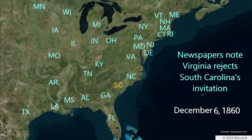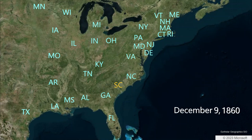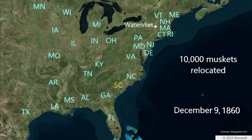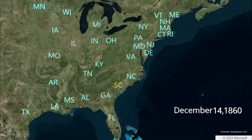Yet the rebuff from Virginia does not stop secession fever. On December 9th, 10,000 muskets are sold from the Watervliet, New York Arsenal. These weapons are suspiciously removed to Savannah, Georgia. Also, firearms manufacturers in the North are reporting large numbers of purchases from southern buyers.